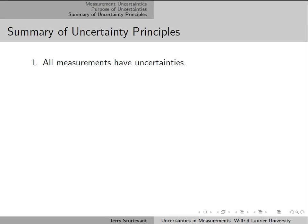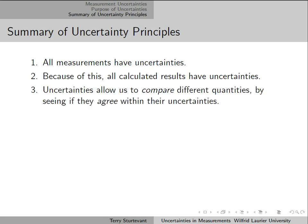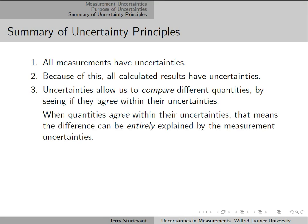Uncertainty principles, in summary: All measurements have uncertainties. Because of this, all calculated results have uncertainties. Uncertainties allow us to compare different quantities by seeing if they agree within their uncertainties. When quantities agree within their uncertainties, that means the difference can be entirely explained by the measurement uncertainties.